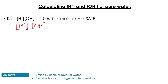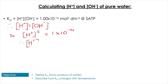Since [H⁺] equals [OH⁻] in a one-to-one reaction, we can say [H⁺]² = Kw. So [H⁺]² = 1 × 10⁻¹⁴. We then take the square root of 1 × 10⁻¹⁴, and that gives us the concentration of H⁺ ions. We'll use this same calculation repeatedly.